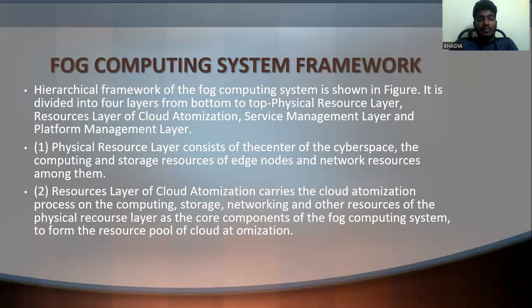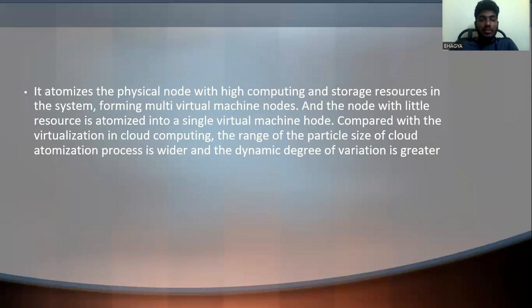The second layer is the resource layer of cloud automation. This layer carries the cloud automation process on the computing, storage, networking, and other resources of the physical resource layer as the core components of the fog computing system. It forms the resource pool of cloud automation, automating physical nodes with high computing and storage resources into multiple virtual machine nodes, while nodes with fewer resources are automated into a single virtual machine node. Compared with virtualization in cloud computing, the range and dynamic degree of variation in cloud automation is wider and greater.